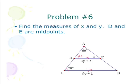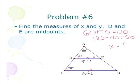solve for X at this point. So I have 60 plus 70 and that gives me 130. So that means that 180 minus 130 because there's 180 degrees in the triangle gives me 50 and I know that X equals 50. So there's one of my answers.